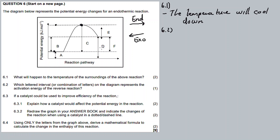For the reverse reaction, the reactants are at the product level, and the products are below. This is a exothermic reaction. So the activation energy this time is measured from the reactant level all the way up to the peak of the graph. Therefore, letter E represents the activation energy in this case.